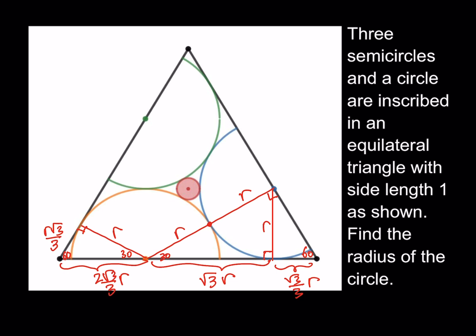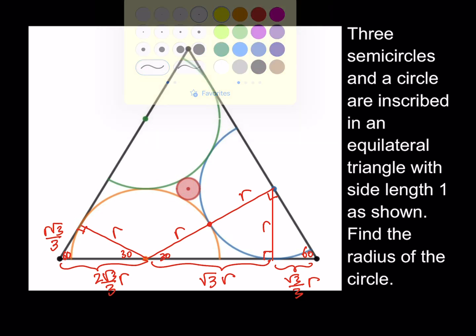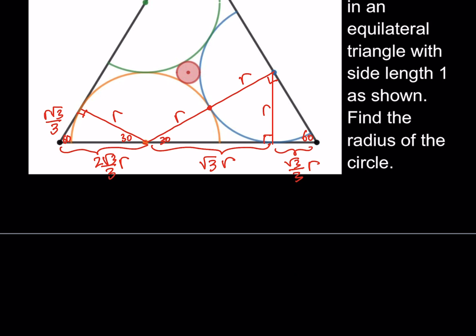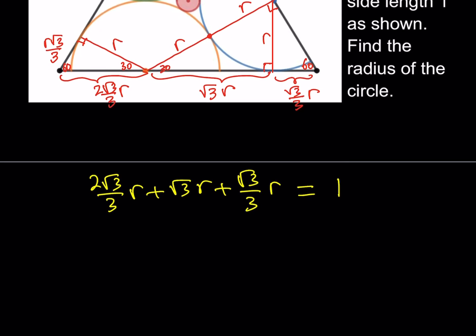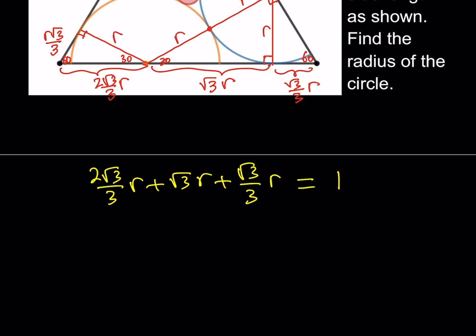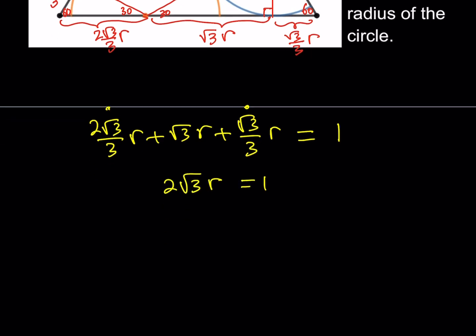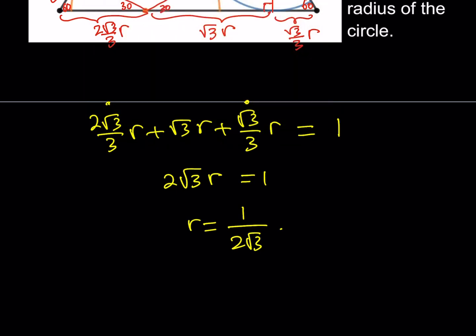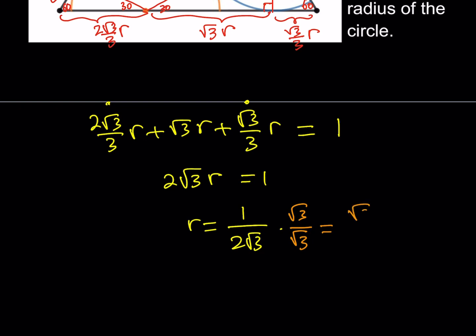Now I can find r because I know the side length of the triangle is 1. So: 2√3/3·r + √3·r + √3/3·r all add up to 1. Adding the first and last terms gives √3·r, so the total is 2√3·r = 1. Therefore r = 1/(2√3), and rationalizing the denominator gives r = √3/6. That's the radius of the semicircle.